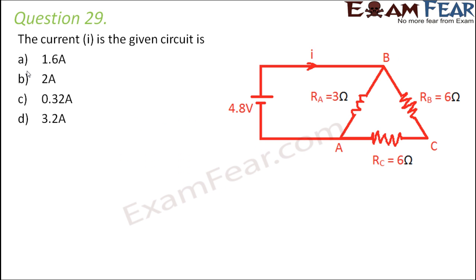Question number 29. The current I in the given circuit is what we need to find out. The circuit looks complicated but it is not that complicated. To find out the value of current through the circuit, first we will have to find out the value of the equivalent resistance. We need to find out the equivalent resistance between points A and B.